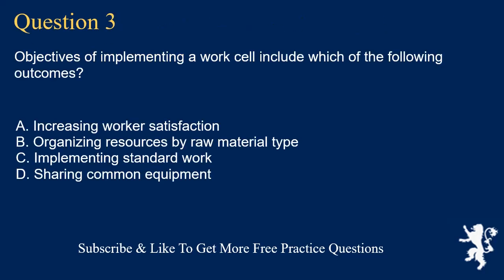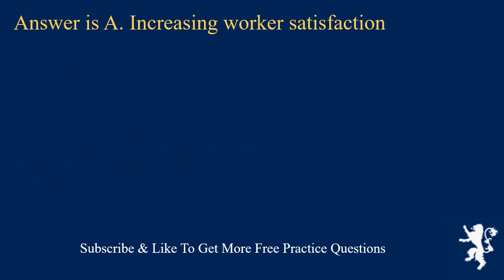Question 3. Objectives of implementing a work cell include which of the following outcomes? A. Increasing worker satisfaction. B. Organizing resources by raw material type. C. Implementing standard work. D. Sharing common equipment. Answer is A. Increasing worker satisfaction.